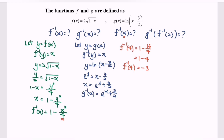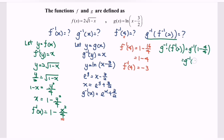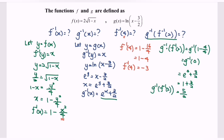Finally, find g inverse composed with f inverse for the value 2. First substitute 2 into f inverse: f inverse of 2 equals 1 minus 2 squared over 4, which is 1 minus 4 over 4, giving 1 minus 1 equals 0. So we have g inverse of 0. Substitute 0 into g inverse: e to the power 0 plus 3 over 2, which is 1 plus 3 over 2, so the answer is 5 over 2. Therefore g inverse composed with f inverse of 2 equals 5 over 2.